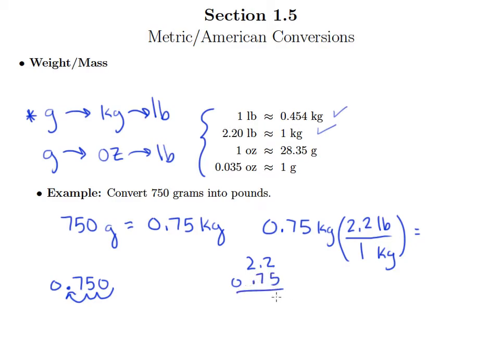So the only thing we have to do is multiply 2.2 and 0.75. So we've got 10 and 11 and 14 and 15. And that's going to be 1.650. So we have 1.65, and I can go ahead and put a zero there to show my accuracy level here. 1.650 pounds.